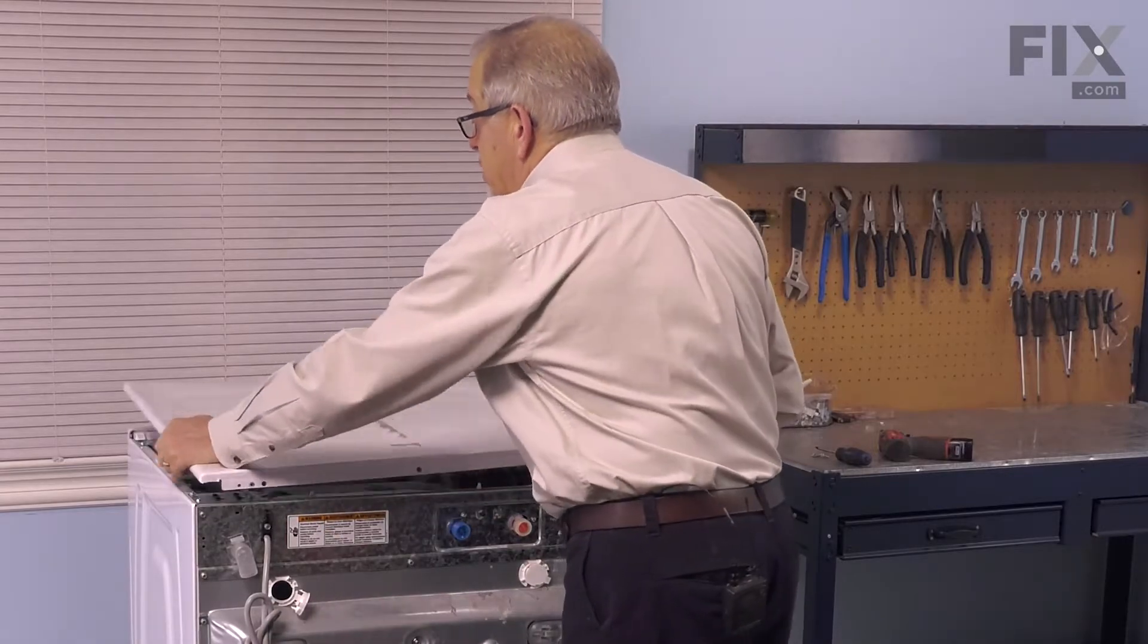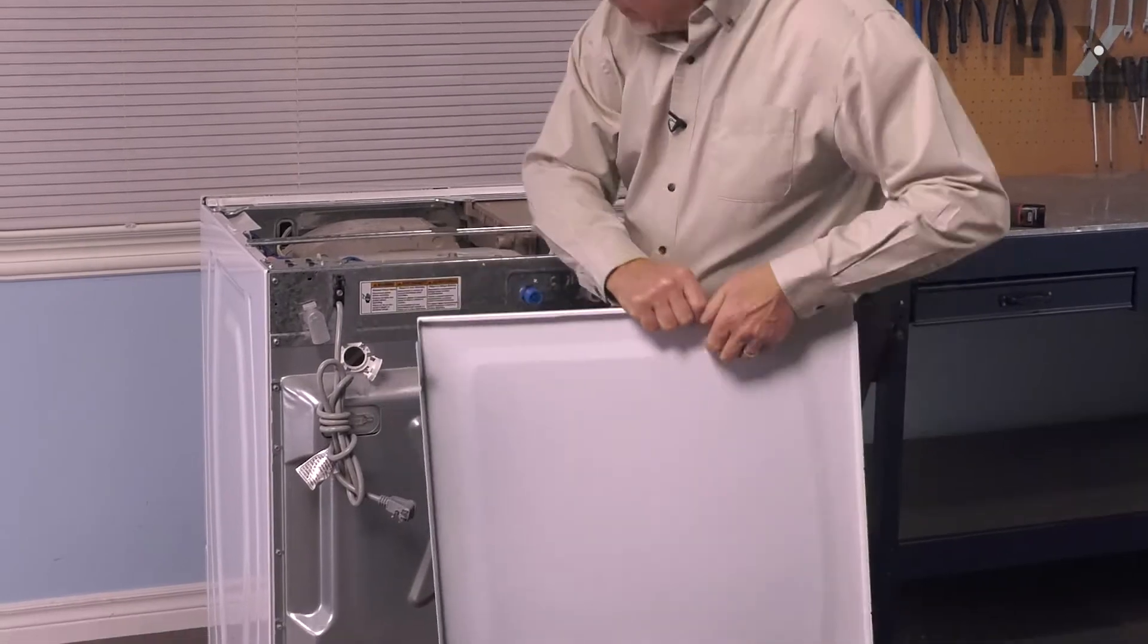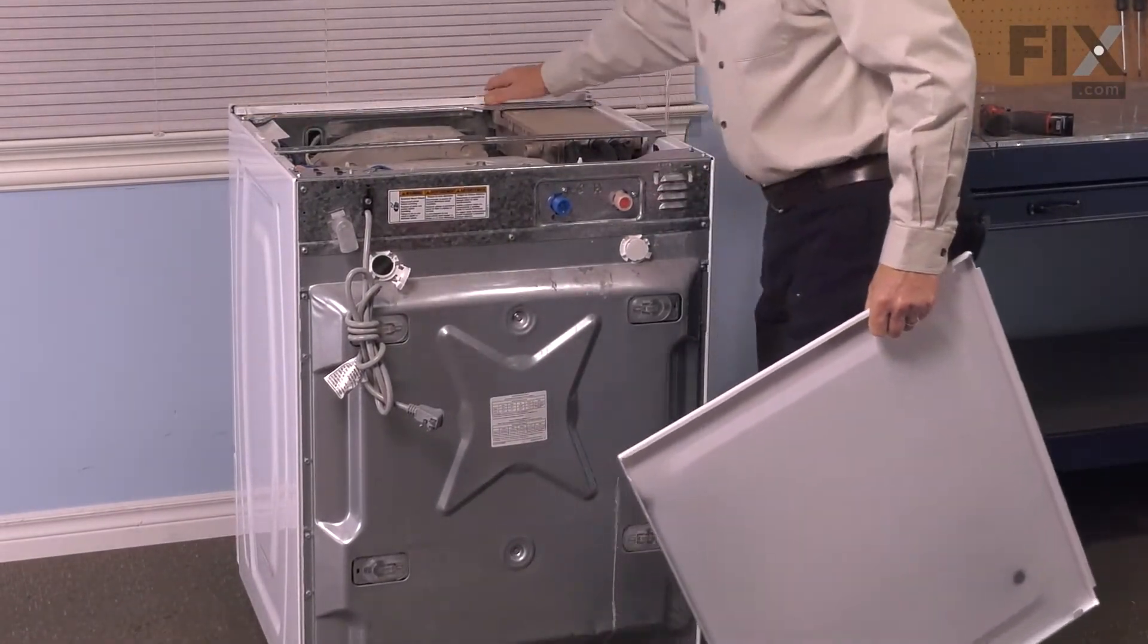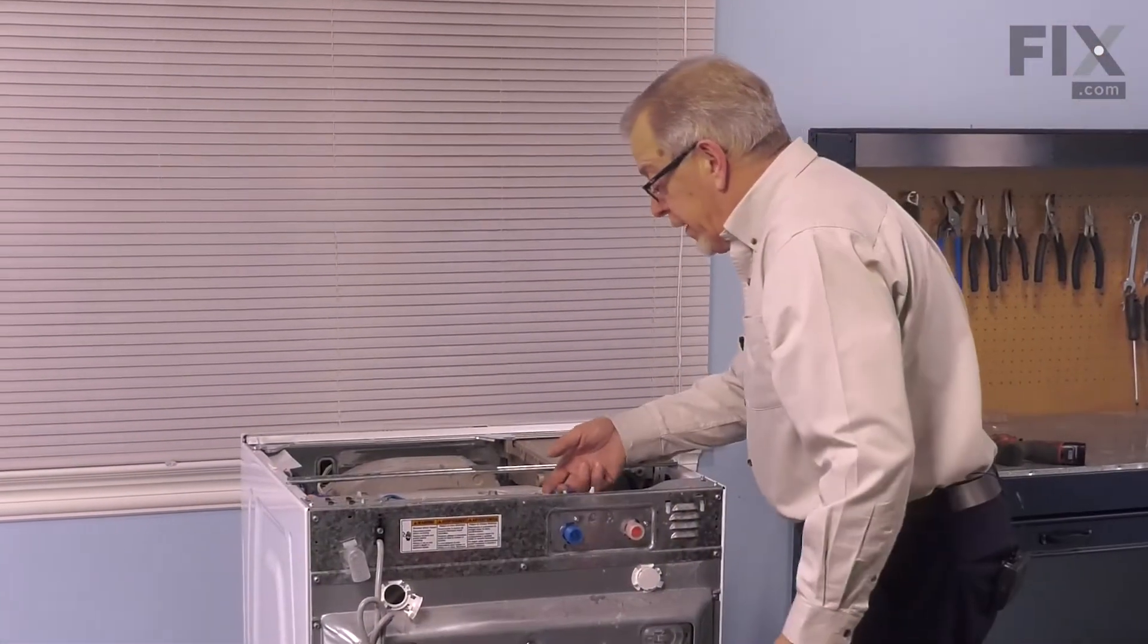That will disengage a couple of little tabs on the front that hook into those two plastic hooks on the back of the control panel. We'll set that aside and rotate the valve.